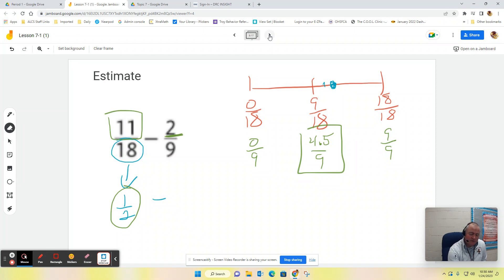Well, two is only two away from zero, but it's two-and-a-half away from four-and-a-half, which makes 2/9 closer to zero. And then when I do my subtraction, well, that equals one-half. So 11/18 minus 2/9 is going to be about one-half.